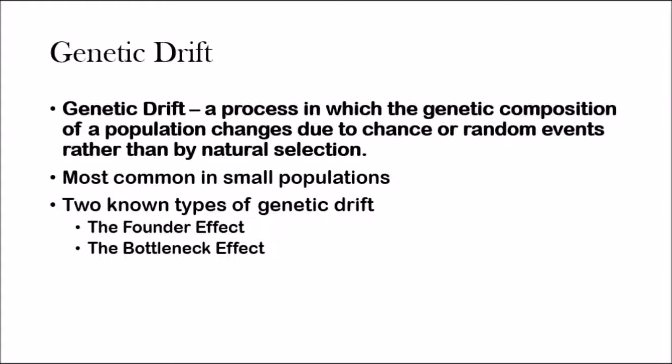Now let's see how genetic drift and gene flow cause microevolution. Genetic drift is a process in which the genetic composition of a population — all the allele frequencies — just change due to chance or random events, rather than by natural selection. It's most common in small populations; you don't see this happening in large populations. There are two known types of genetic drift: the founder effect and the bottleneck effect.